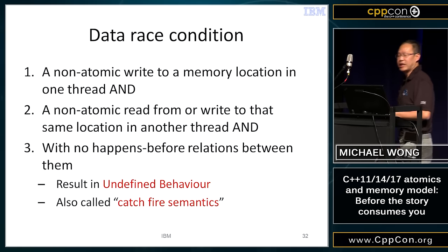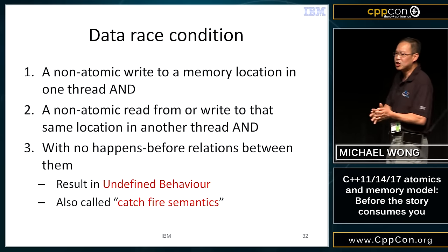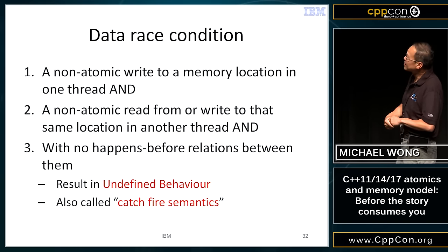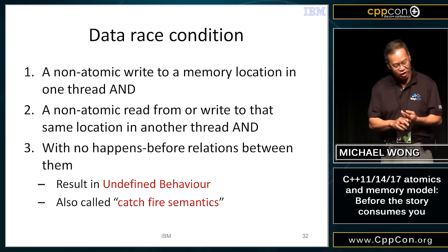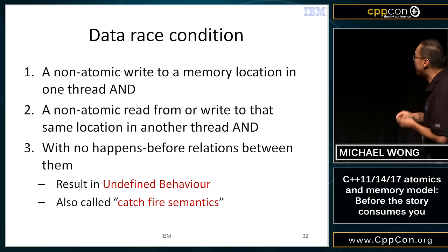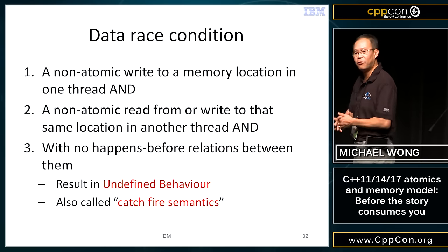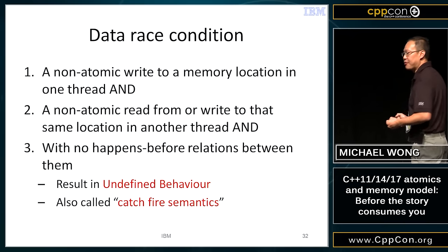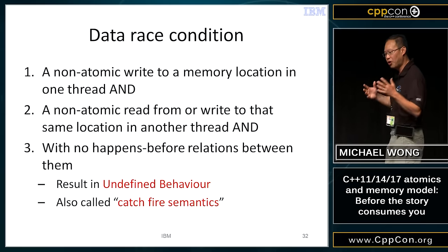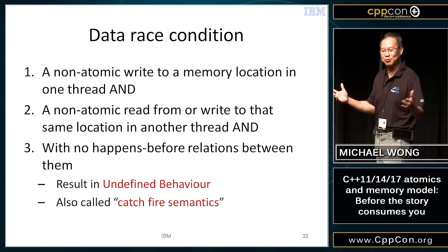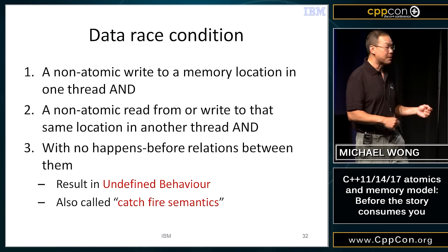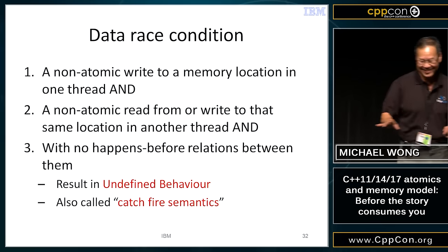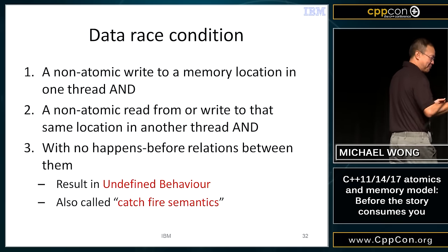We also had to define what a data race is. These three statements work together and you have to remember every word. The key: it has to be a non-atomic access, one of them has to be a write, and there's no enforced ordering — which is what happens-before means — between them. The result is undefined behavior, meaning 3,000 golf balls will be shipped to your door on Wednesday. Other people call it catch-fire semantics.